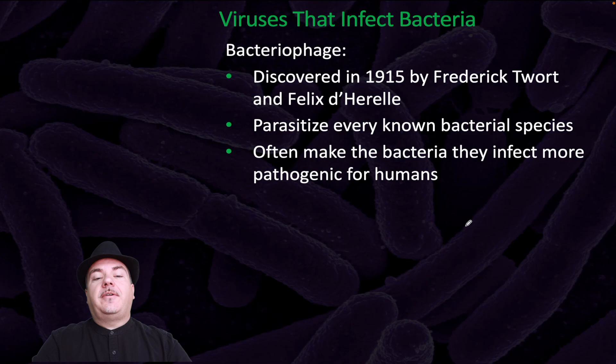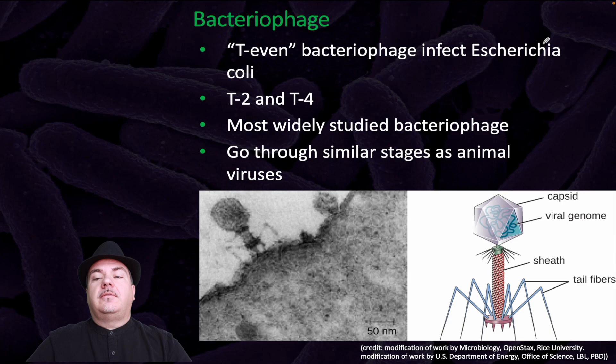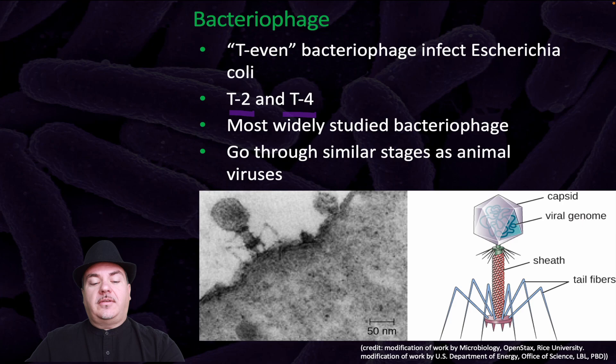There are also viruses that infect bacteria, called bacteriophages. They were discovered in 1915, are parasites of every known bacterial species, and often make the bacteria they infect more pathogenic for humans. The T-even bacteriophages — for example T2 and T4 — infect Escherichia coli and are the most widely studied bacteriophages, going through similar stages as animal viruses.